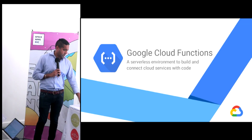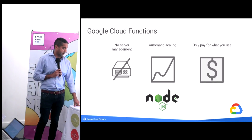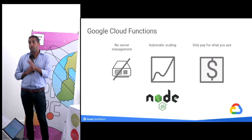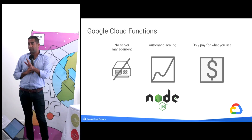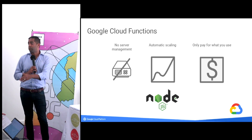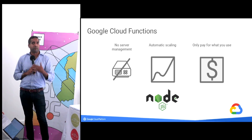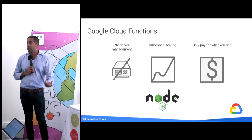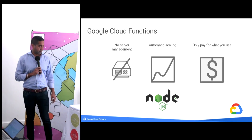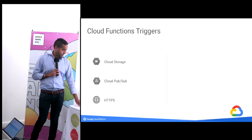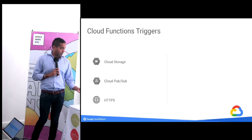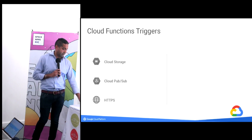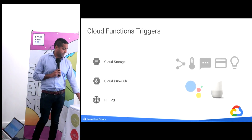Cloud functions provide no server management and automatic scaling — both up and down. Let's say you launch an app that weekend and it's a hit: you don't have to worry about it going down. And if it's not a hit, you're not paying for servers for no reason.